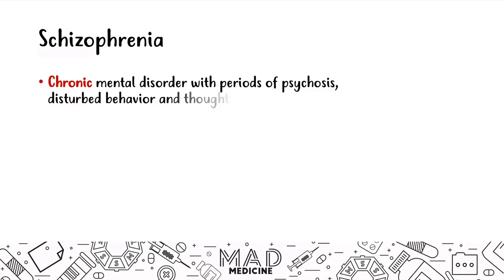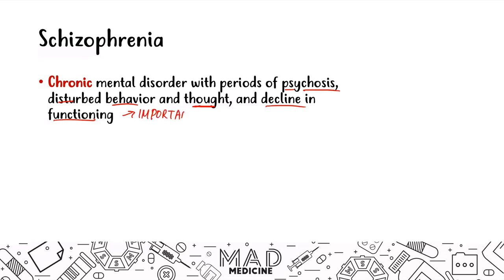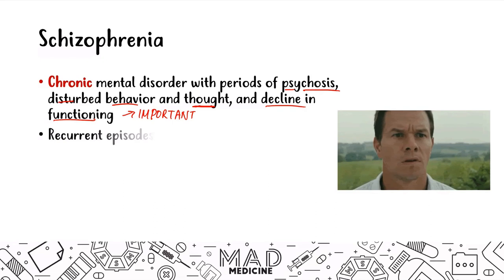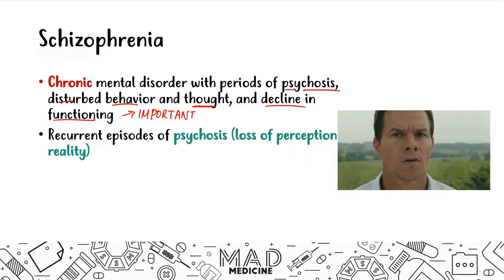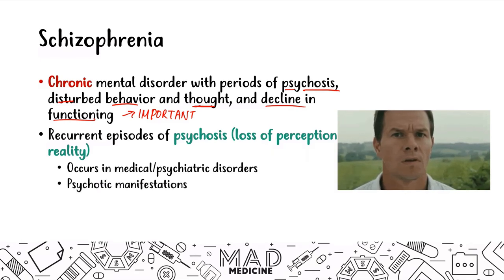Schizophrenia is a chronic mental disorder where patients have periods of psychosis. They're going to have disturbed behavior and thought, and the main thing is that they're going to have a decline in function. That's pretty important because that's what is usually going to cause schizophrenic patients to be brought into the clinic. Patients are going to have recurrent episodes of psychosis, which we've discussed in our previous video. Psychosis is a very hallmark presentation of schizophrenia.